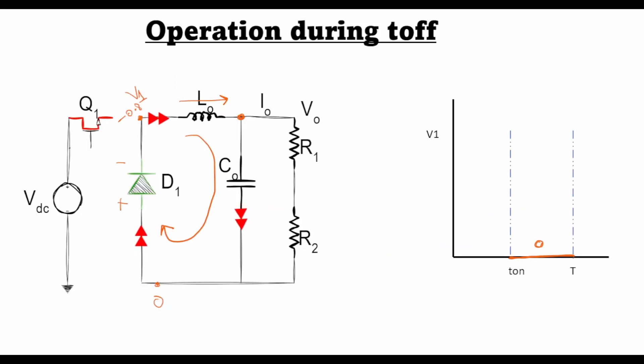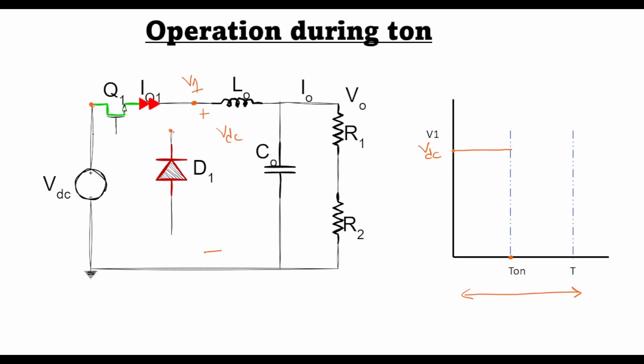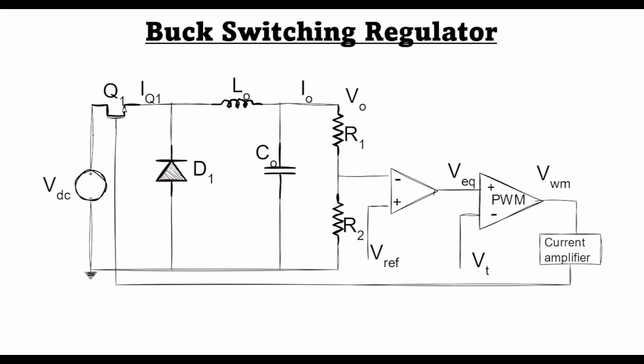So this was the first lecture on the basic operation of a buck regulator. In the next lecture, we will go into more detail about the feedback loop that we have here, how is the PWM operation achieved in a buck regulator, and also we will look at how these components—the inductor and the capacitor—are designed. So that's it for today. See you in the next lecture.